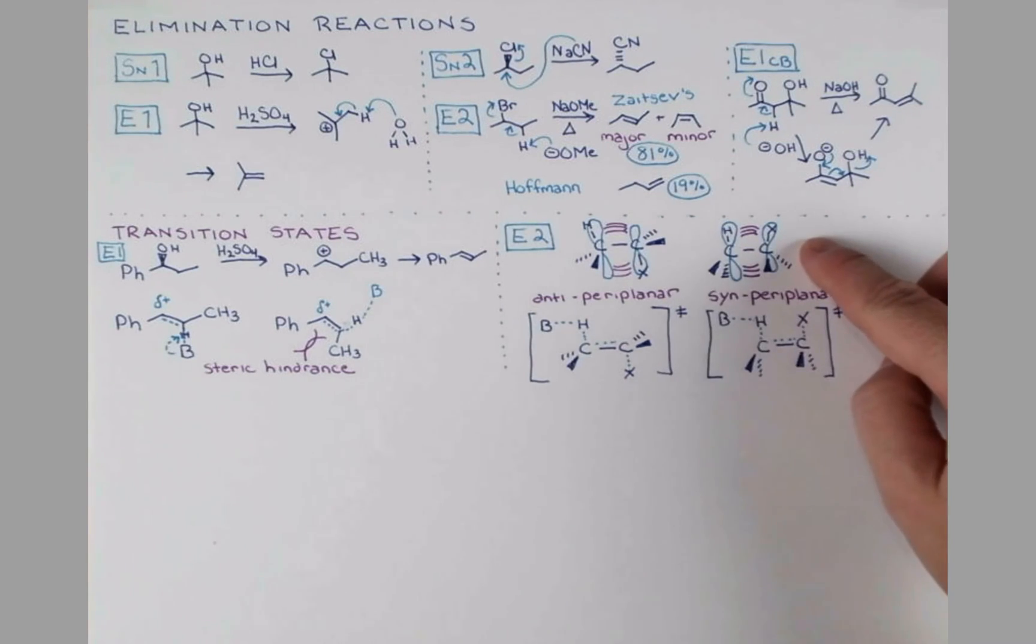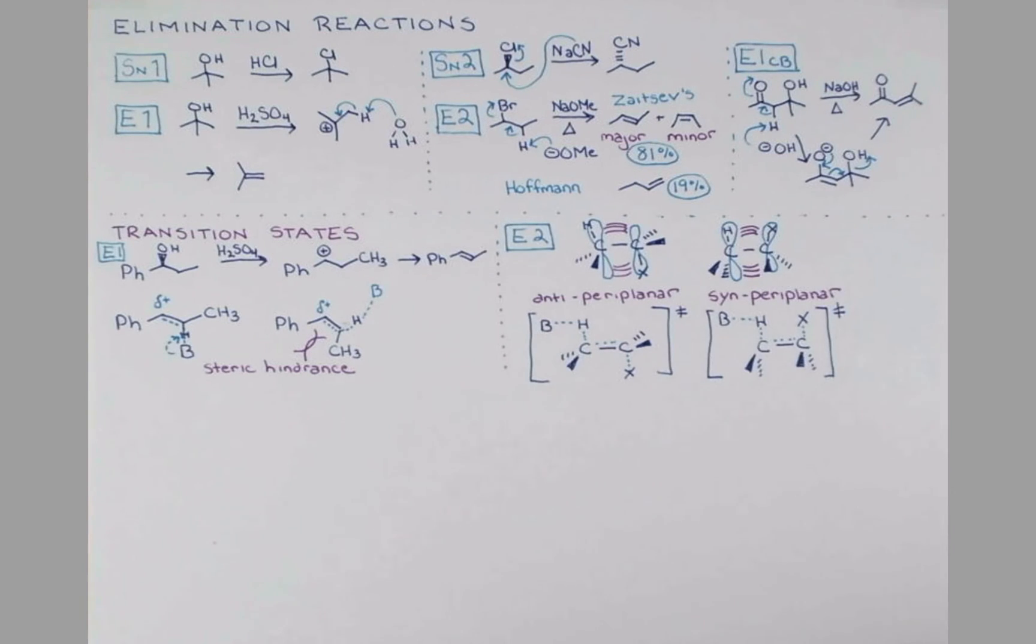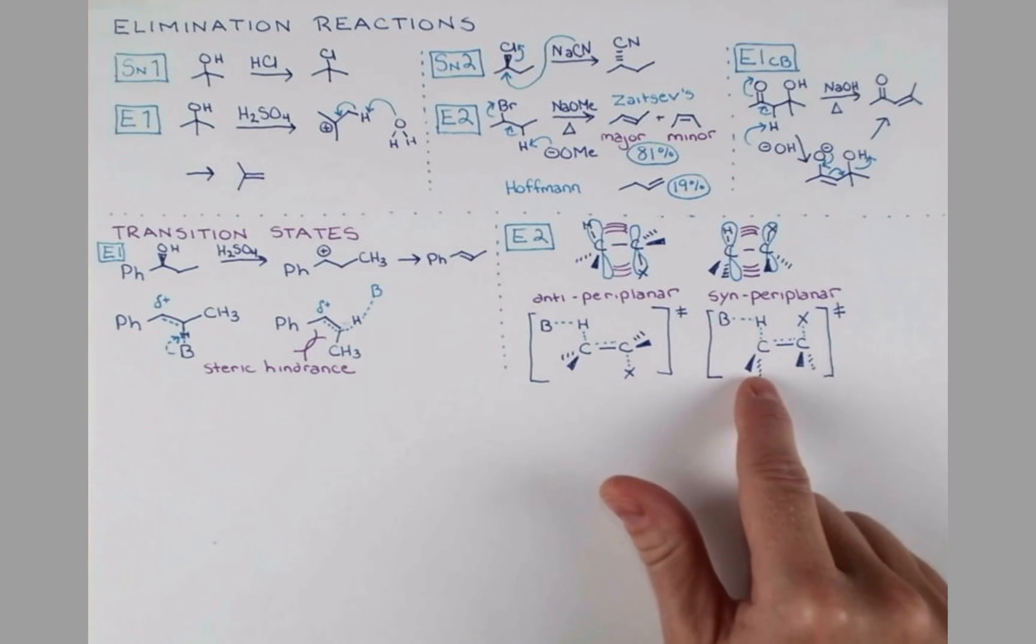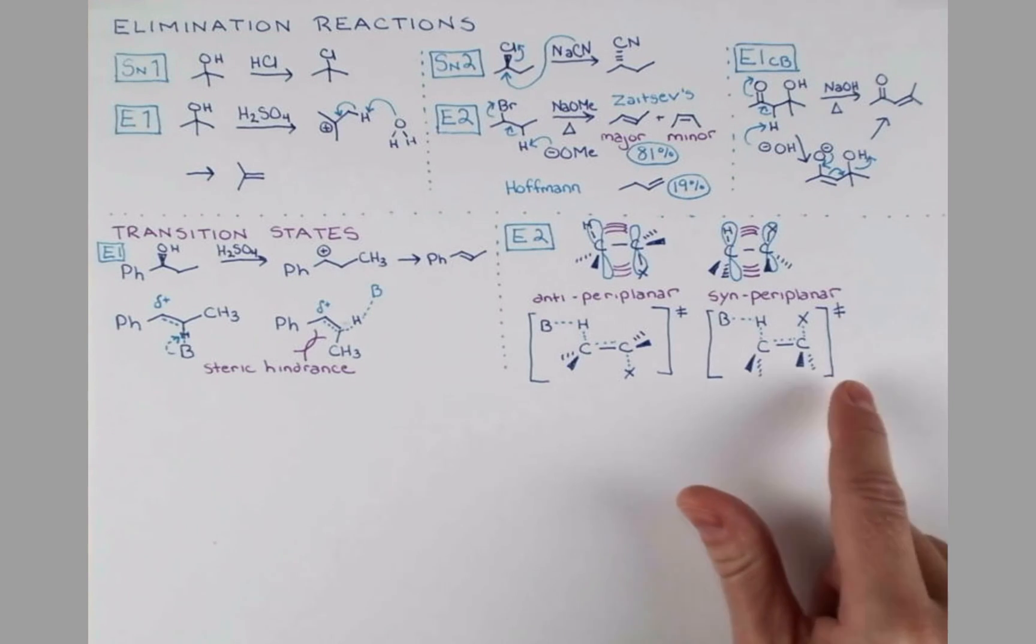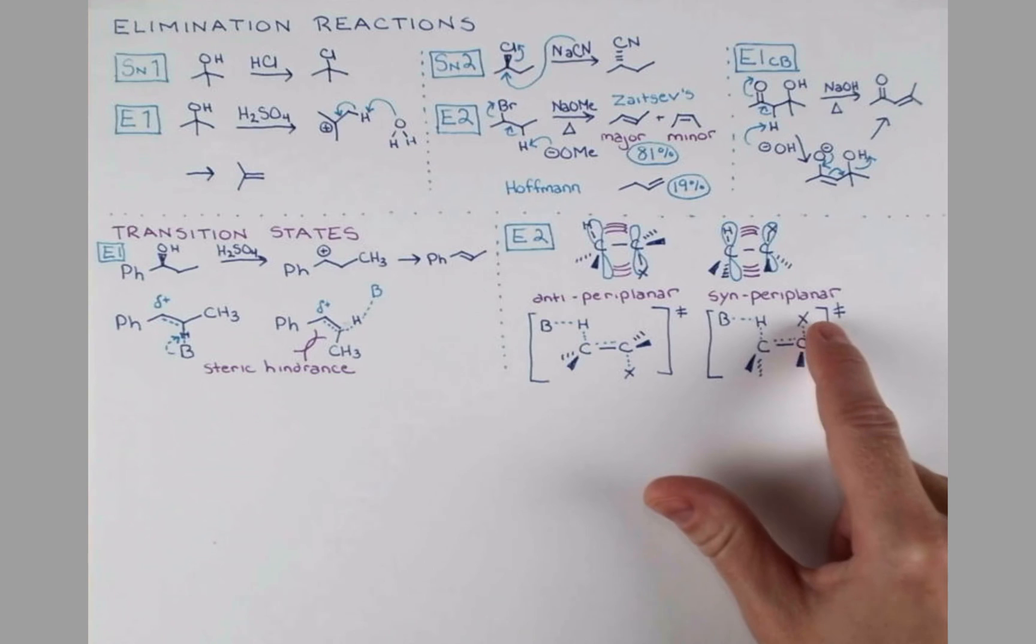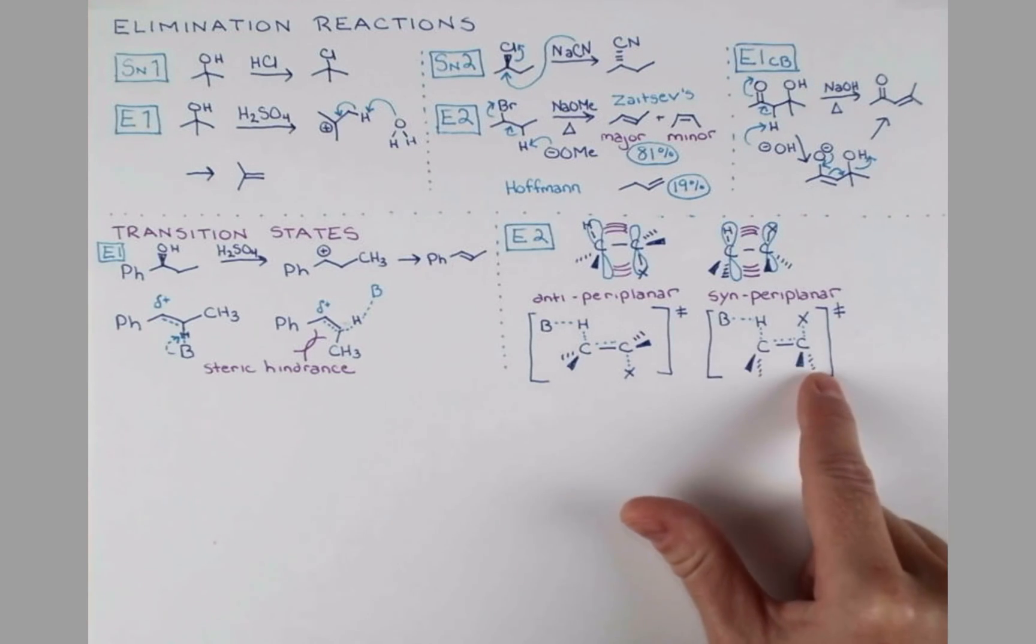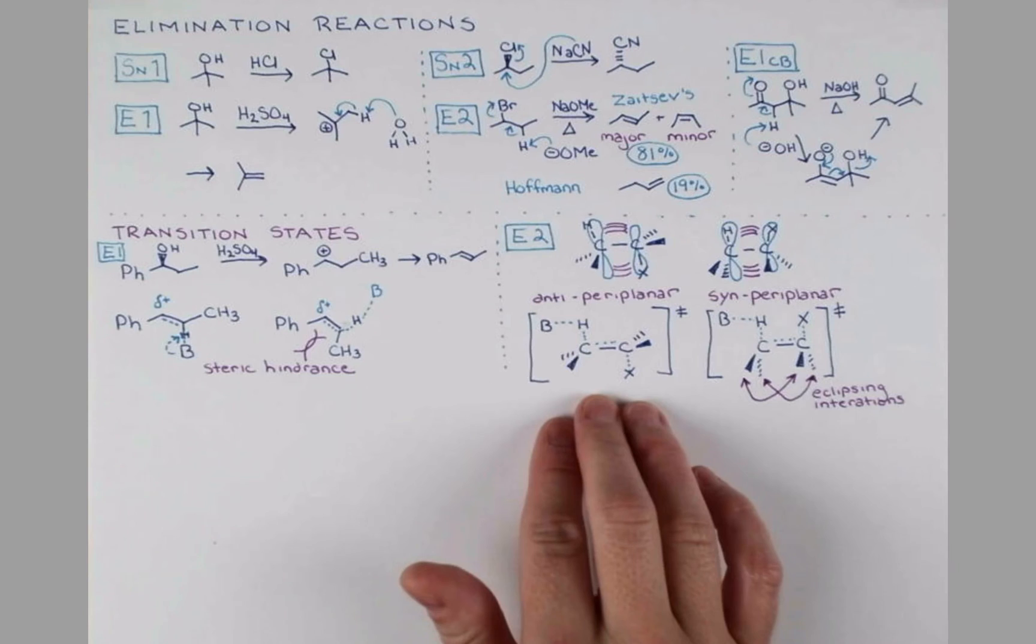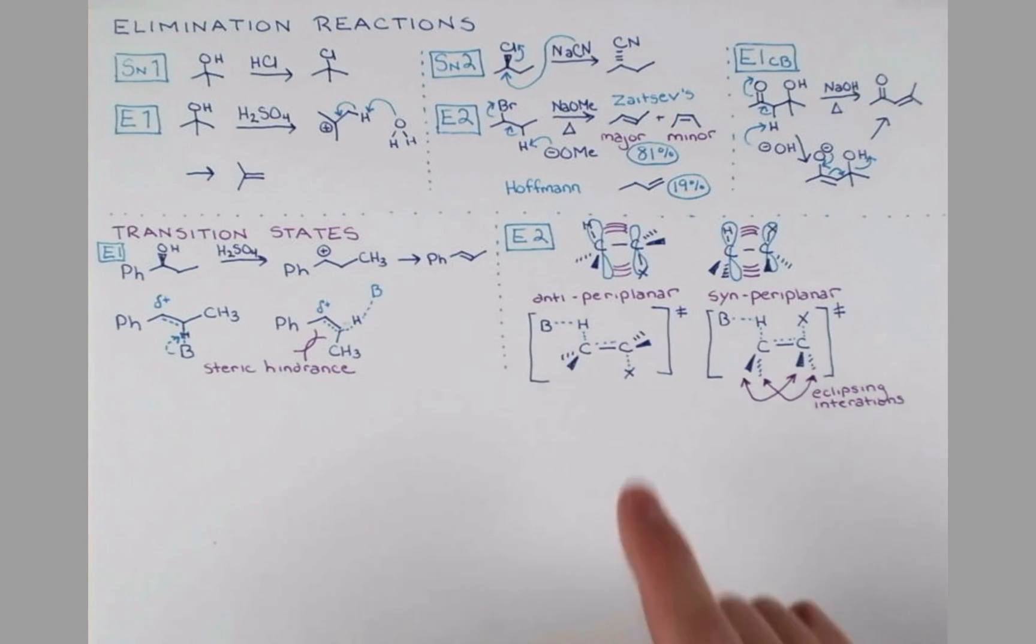In the syn-periplanar transition state, we have the base coming in. All of these partial bonds and the X group is breaking leaving from the top. That allows for our good orbital overlap. But one thing that we need to notice about the syn-periplanar transition state is that we have eclipsing interactions. In order for the hydrogen and the leaving group to get into plane, these groups are eclipsed with each other.